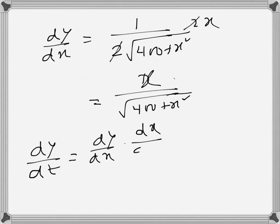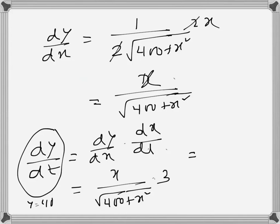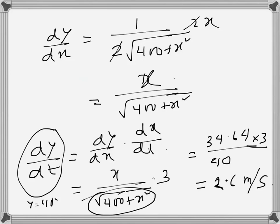That's x/√(400+x²) times 3. When y is 40, we need to find dy/dt. When y equals 40, x equals 34.64, so we write that as 34.64 over 40 times 3. What we get here is 2.6 meters per second, so that's the velocity at which the string will be let out when the string length is 40 meters.